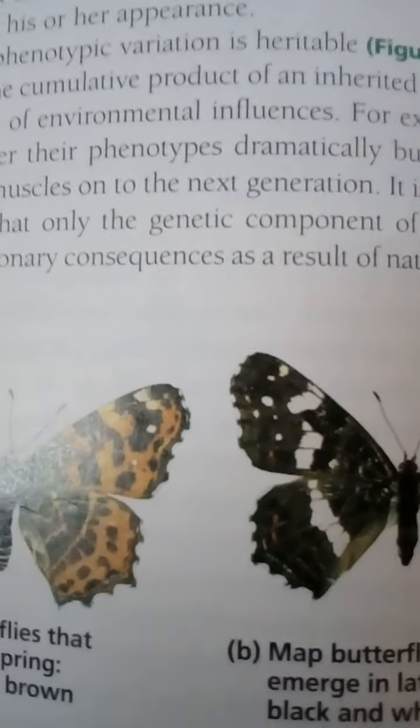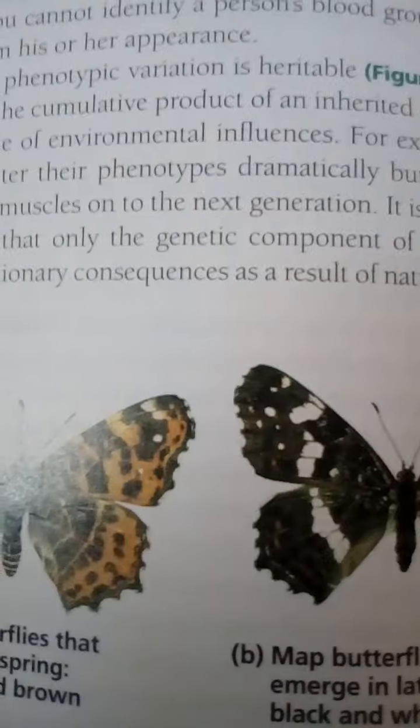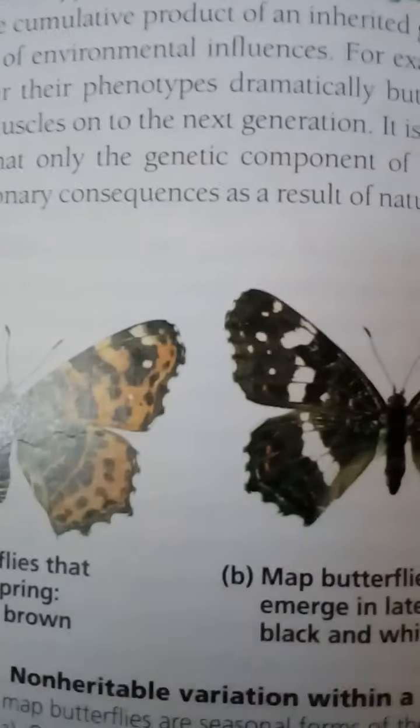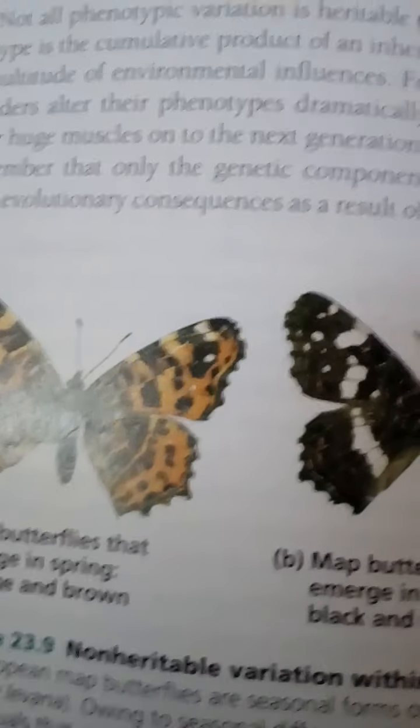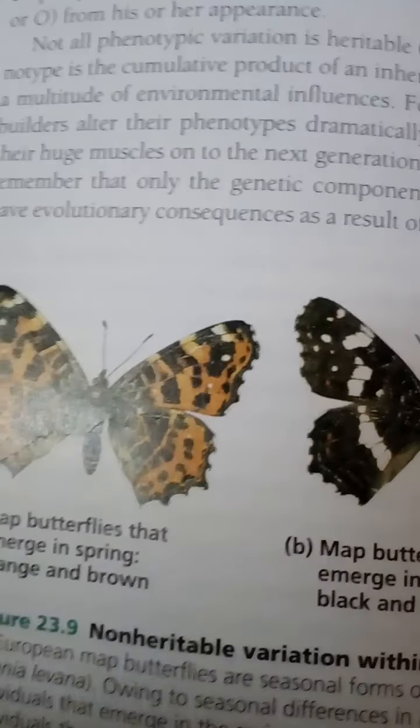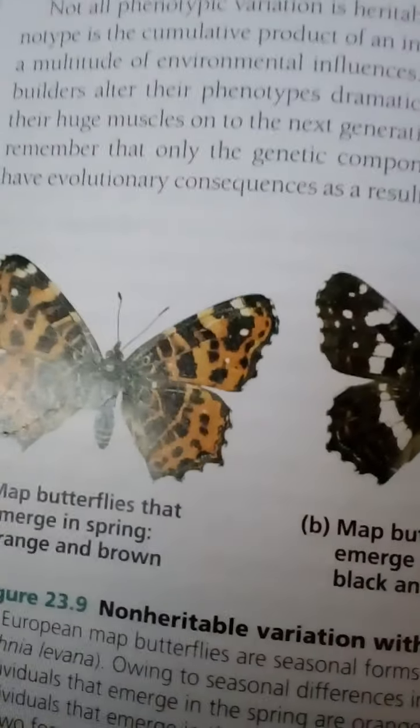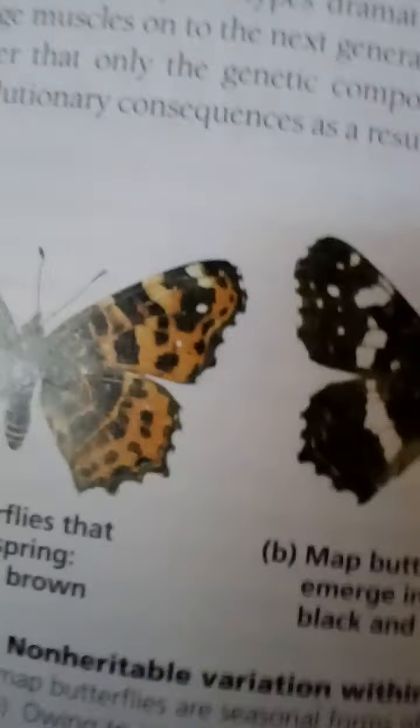For example, we cannot identify a person's blood group — A, B, AB, or O — from his or her appearance. Not all phenotypic variation is heritable. Phenotype is the cumulative product of an inherited genotype and a multitude of environmental influences. For example, bodybuilders alter their phenotypes dramatically, but do not pass their huge muscles onto the next generation. Only the genetic components of variation can have evolutionary consequences as a result of natural selection.